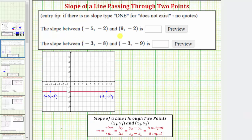We're asked to find the slope given two points on a line. The slope of a line is equal to the ratio of the rise to the run, which equals the ratio of the vertical change to horizontal change. To find the vertical change, we need to find the change of y, which is the difference of the y-coordinates. And to find the horizontal change, or the change of x, we need to find the change in the x-coordinates.